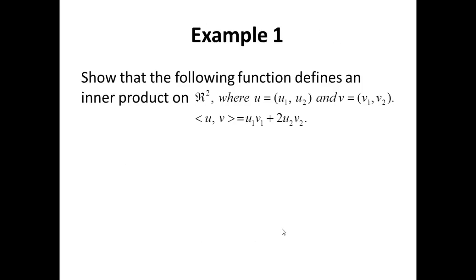Let's follow that with an example. Define the function ⟨U, V⟩ by U₁V₁ + 2U₂V₂ on R², where U is defined by the components (U₁, U₂) and V is defined by the components (V₁, V₂). Observe this definition very closely — we multiply the first components plus two times the product of the second components.